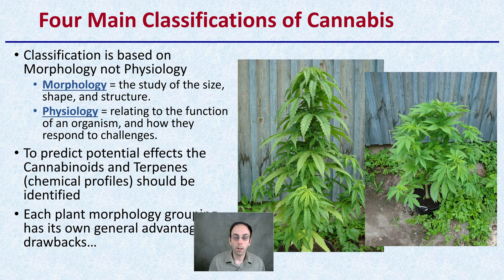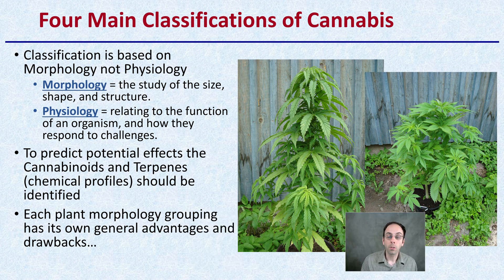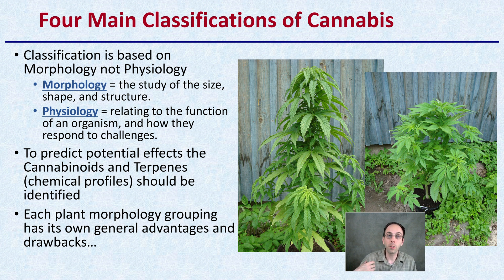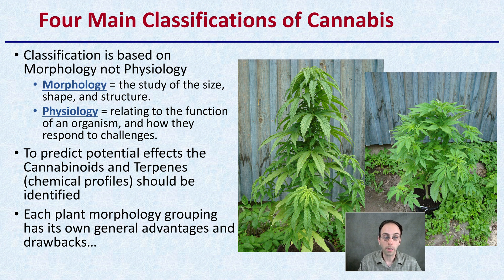Forming classifications of cannabis in general — remember that classification is really based more on morphology, not physiology. Morphology is the study of size, shape, and structure — how it physically looks, the phenotype. Physiology relates to the function of the organism and how it responds to challenges. For example, a muscle would represent the morphology — whether it's skeletal or cardiac — and physiology is how that muscle actually contracts.